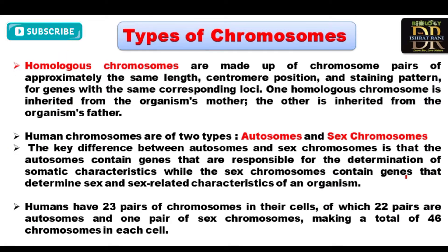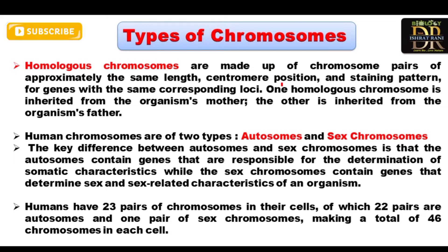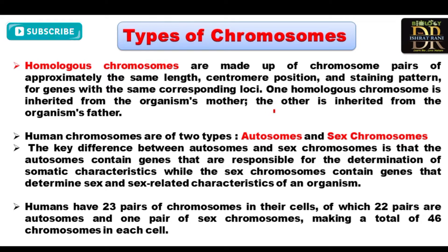What are the types of chromosomes? Chromosomes include homologous chromosomes — pairs having the same length, centromere position, staining pattern, and corresponding gene loci. One homologous chromosome is inherited from the mother and the other from the father of the organism.